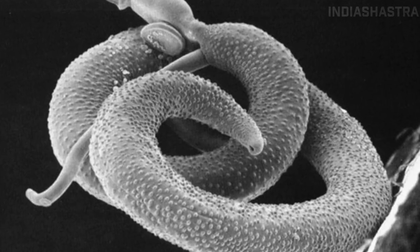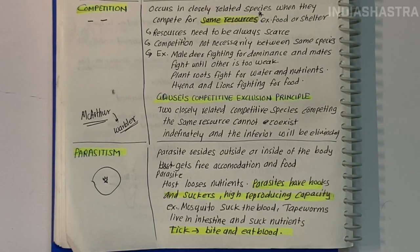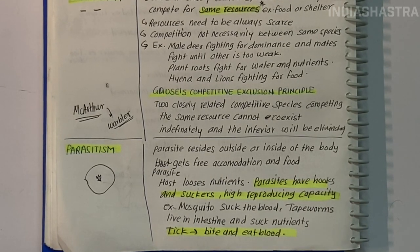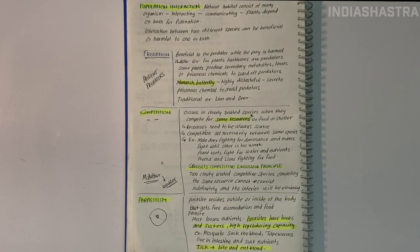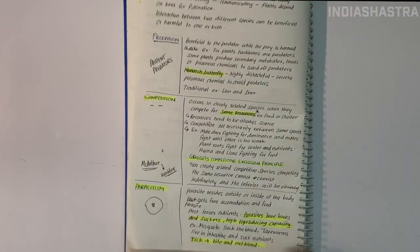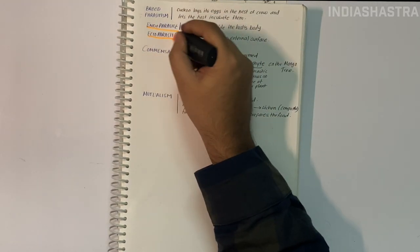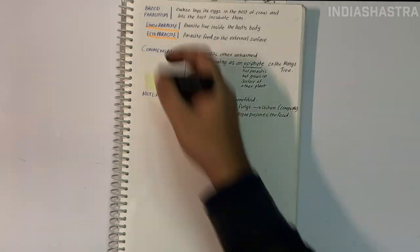Examples are helminths - worms in intestines that suck nutrients, lice in human head, and Plasmodium species transmitted by Anopheles mosquito causing malaria. Most parasites harm the host, reducing survival, growth and reproduction, and reducing population density. They may render the host more vulnerable to predation by making it physically weak. Parasites feeding on external surface are ectoparasites like lice on humans and ticks on dogs.